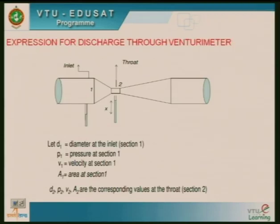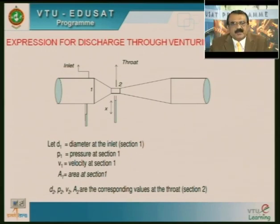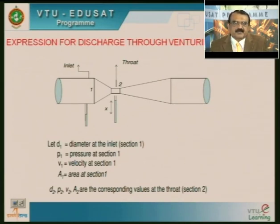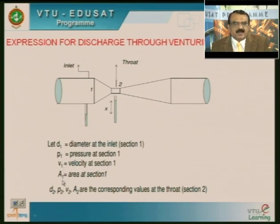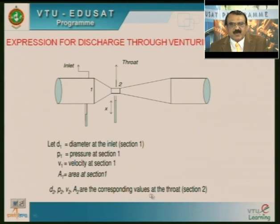Now, what is the expression for discharge through the Venturimeter? Consider a Venturimeter with two piezometers — one at the inlet (section 1) and one at the throat (section 2). Let D1, P1, V1, A1 be the diameter, pressure, velocity, and cross-sectional area at section 1. Similarly, D2, P2, V2, and A2 are the corresponding values at the throat section. We write Bernoulli's equation between section 1 and section 2: P1/ρg + V1²/2g + Z1 = P2/ρg + V2²/2g + Z2.